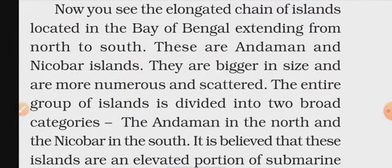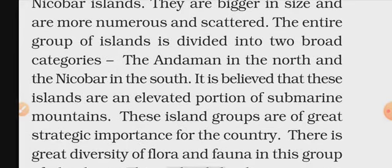Now you will see the elongated chain of islands located in the Bay of Bengal, extending from north to south. Elongated chain means a long chain. Compared to Lakshadweep, these Andaman and Nicobar islands are bigger in size, more numerous, and scattered — around 8 to 9 island groups going north to south. The entire group is divided into two broad categories: the north is called Andaman and the south is called Nicobar.